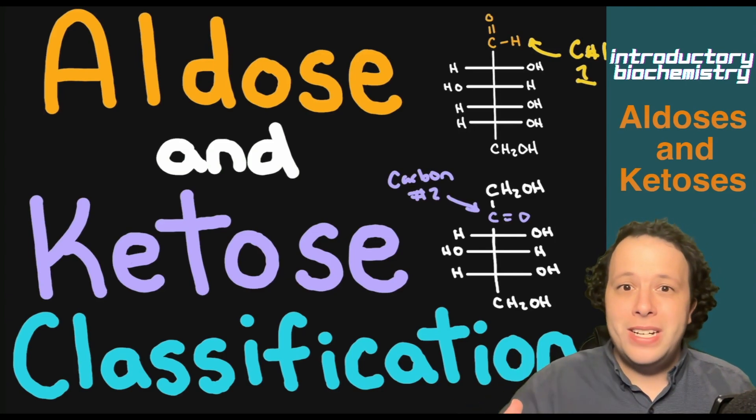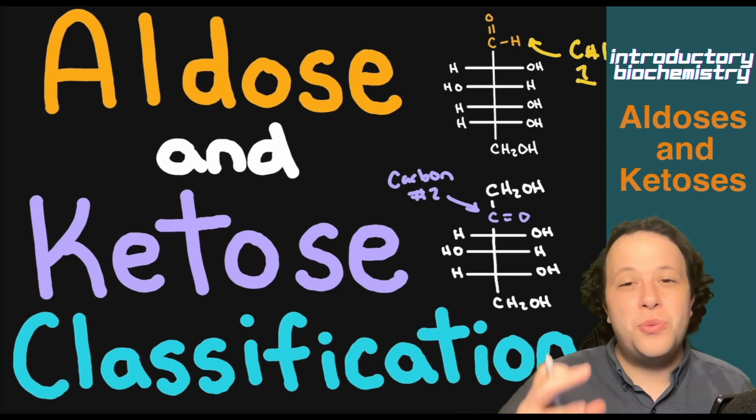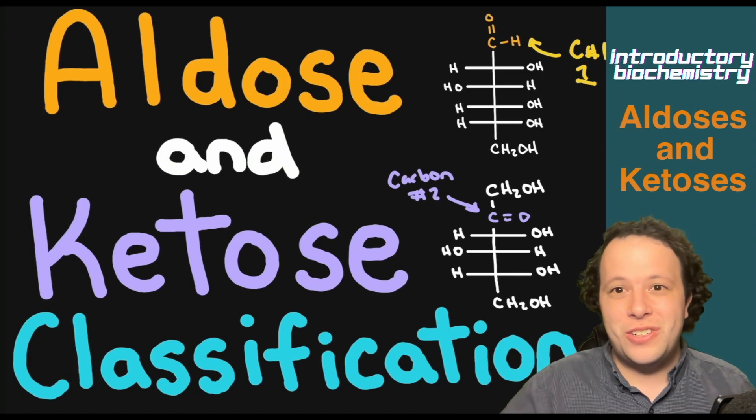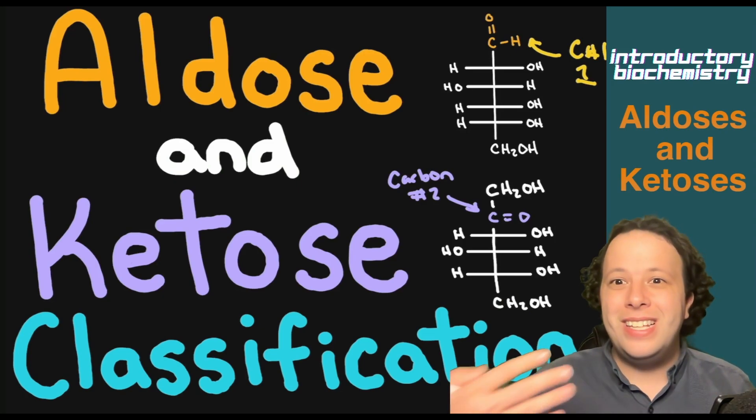We're going to go through step by step how we can actually classify these as aldoses, ketoses, what exactly they are, and how we can count the number of carbons in these different structures and how we can label them for your biochemistry course.